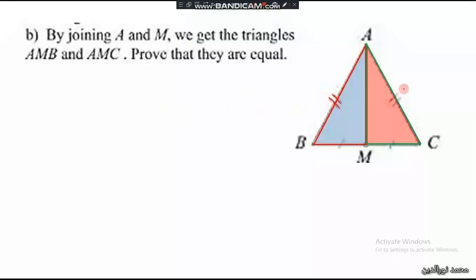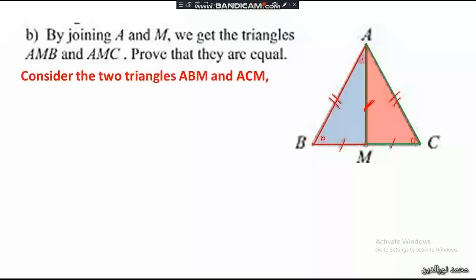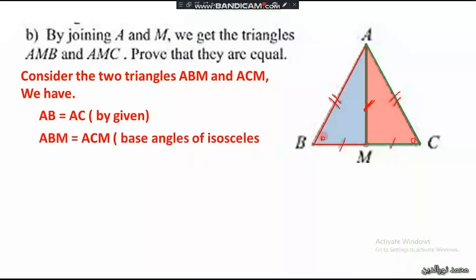We could prove them using different cases. We have side AB equals side AC, and side BM equals side MC. We still need to prove an included angle — angle B and angle C are equal — to use SAS, or we could use the SSS case by proving the common side AM is equal in both triangles.